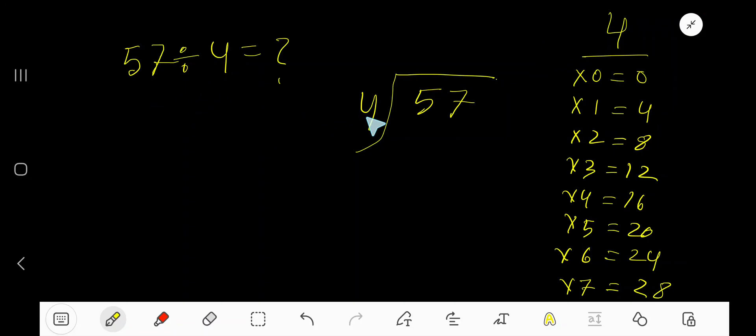57 divided by 4. Here, 4 is the divisor, so we need the multiplication table of 4: 4 times 0 is 0, 4 times 1 is 4, 4 times 2 is 8, 4 times 3 is 12. To find the multiplication table of 4, just add 4 with the previous step: 0 plus 4 is 4, 4 plus 4 is 8, 8 plus 4 is 12, 12 plus 4 is 16.